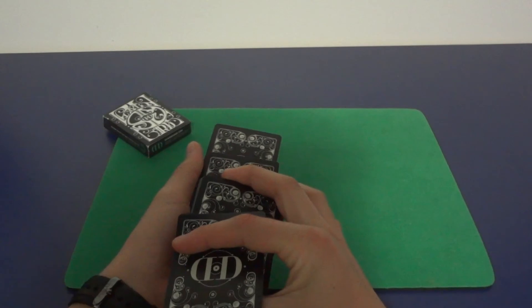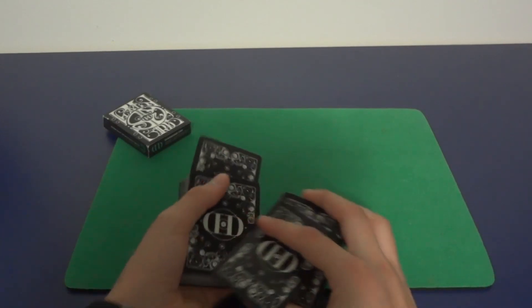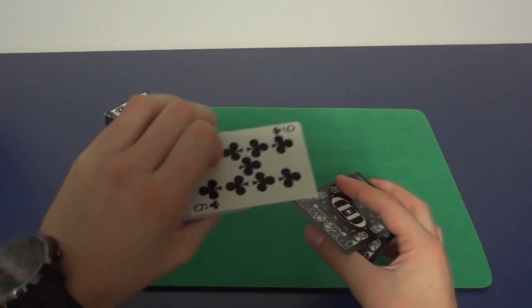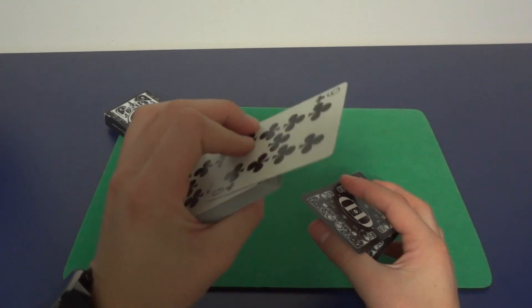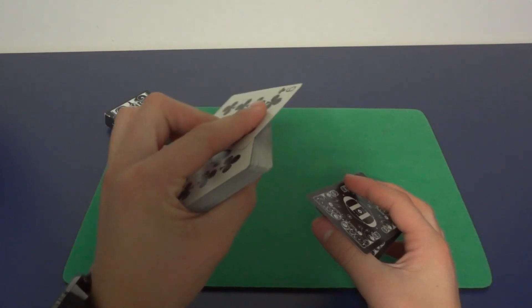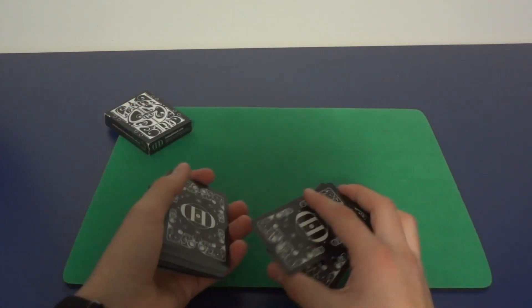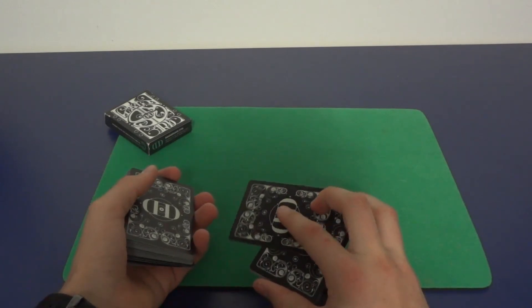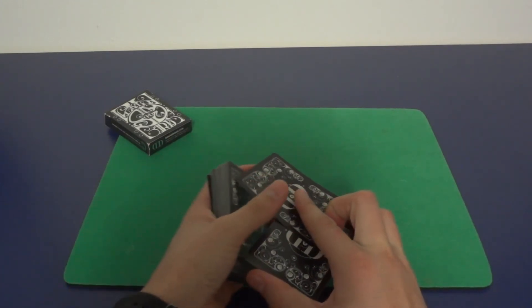Then with your pointer finger and your middle finger, you're going to revolve this card like so, so it closes. While you're doing that, you're going to revolve this one the same way, basically, and then you're going to grab it.